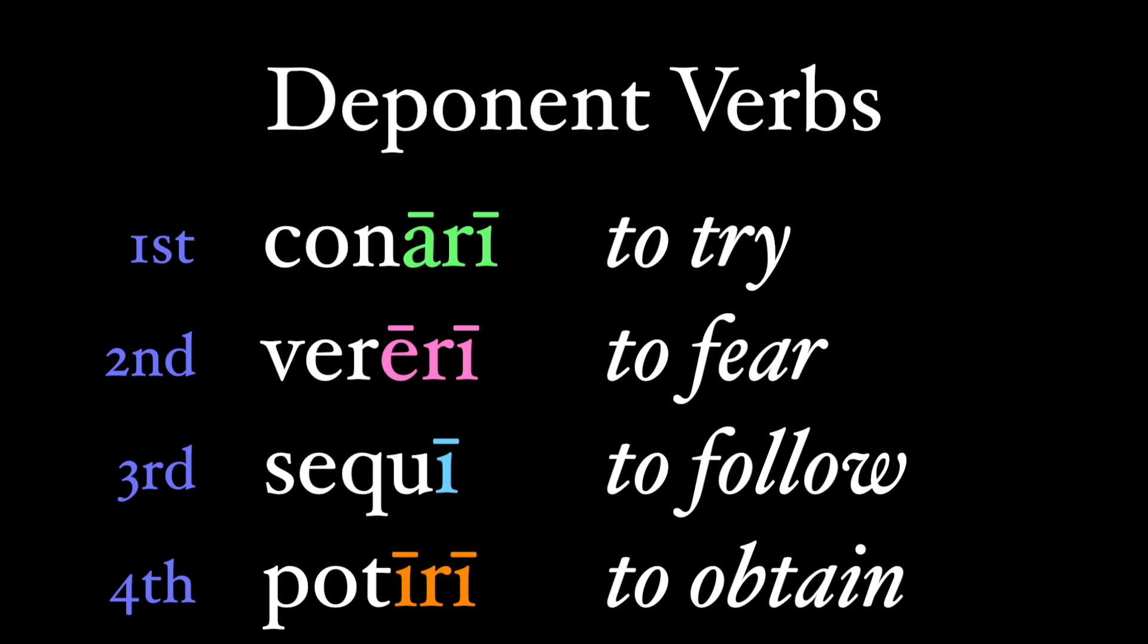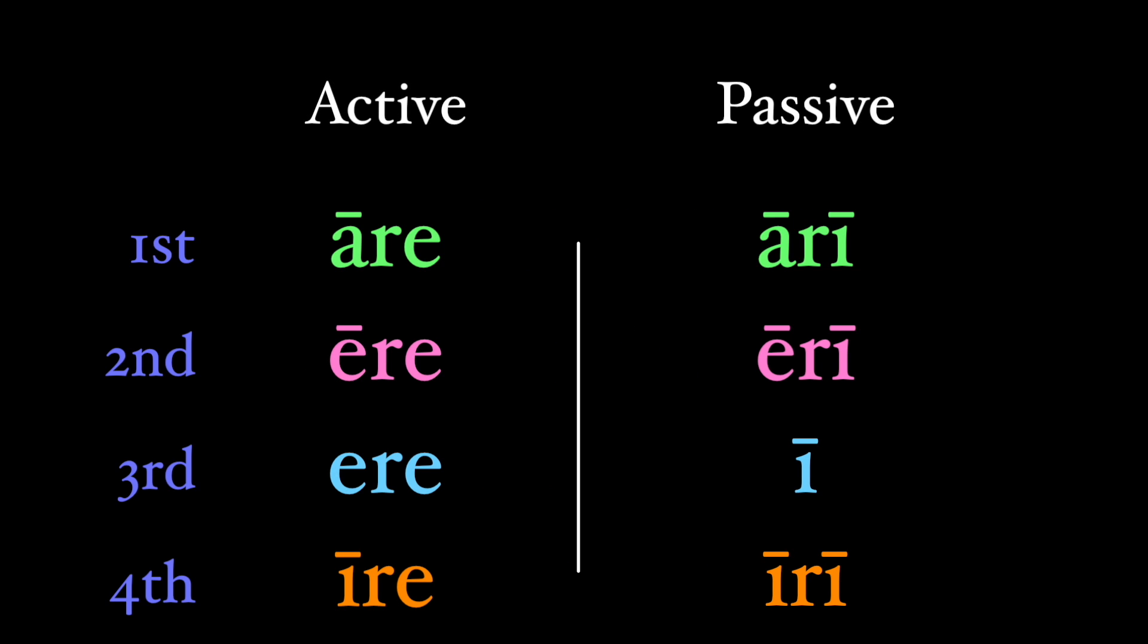You can see the present passive ending in each of these infinitives, even though the English translation of these infinitives is active. But here's the important thing. You can also check out this infinitive ending in order to determine which conjugation number a deponent verb belongs to. Just like the active present infinitive forms, they are all unique, and we can use them to help us classify.